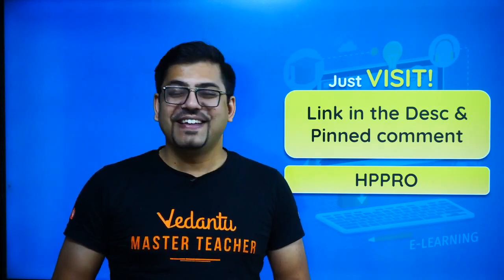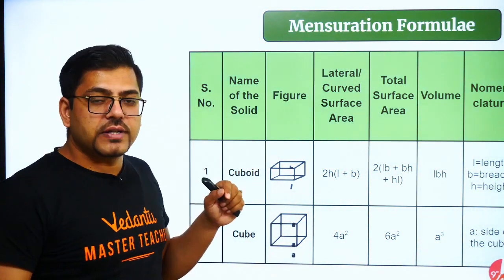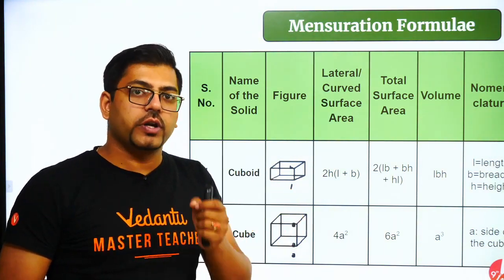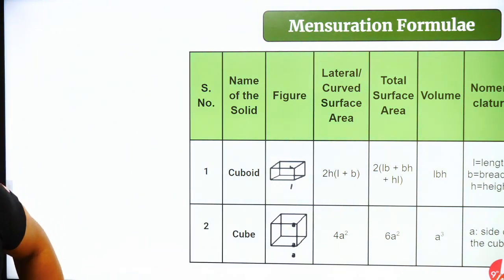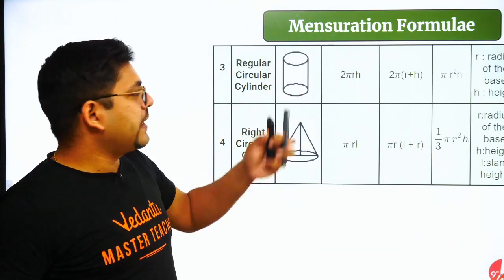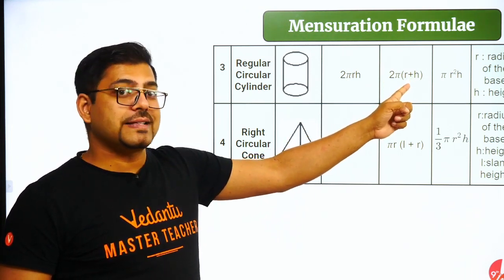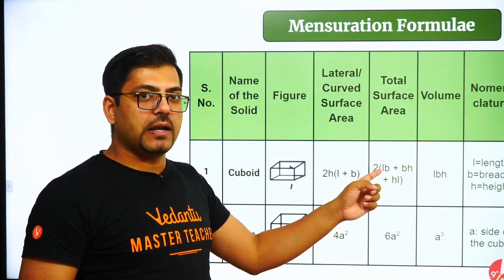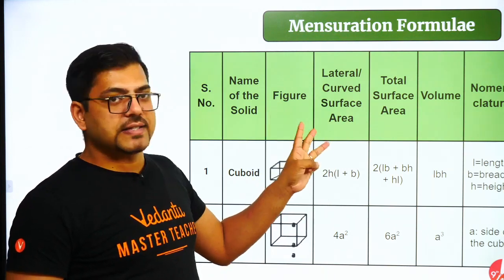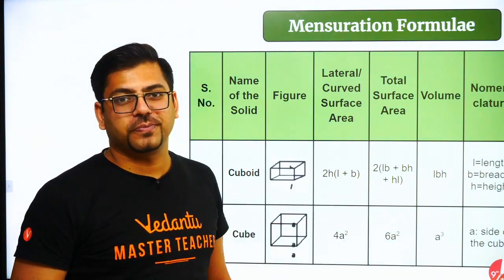Moving on, let's see the first set of formulas. In this mensuration formula section, all these formulas - just see them. If you want, write them down somewhere in your copy because these formulas are important. For cuboid, curved surface area is 2h(l+b), total surface area is 2(lb+bh+hl), and volume is lbh. For cube: CSA is 4a², TSA is 6a², volume is a³.